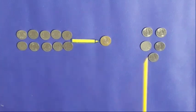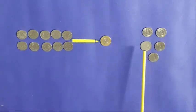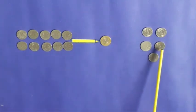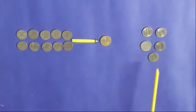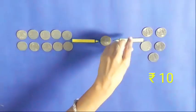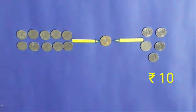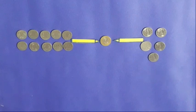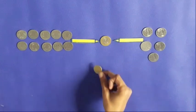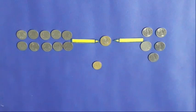Now we will count these coins. Count with me: 1, 2, 3, 4, 5. These are 5 coins of rupees 2. The value of these coins is rupees 10, and the value of these coins is equal to the value of rupees 10.